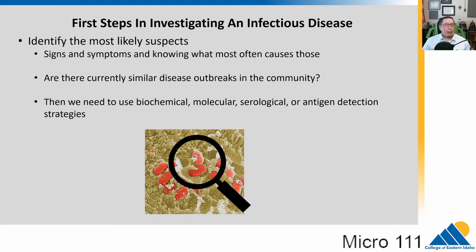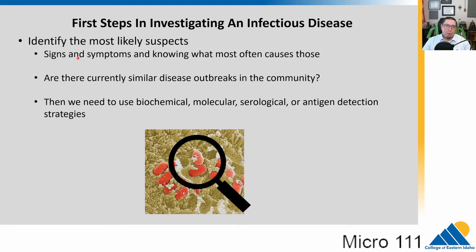It is very important to identify the most likely suspects causing an infection in order to treat it properly. We could suspect bacteria, but it could be viral in nature — that requires very different treatments. We start with signs and symptoms, knowing what can most often cause these is key to rapidly responding. Sometimes the very early things you do can really determine whether someone has a good or bad outcome.